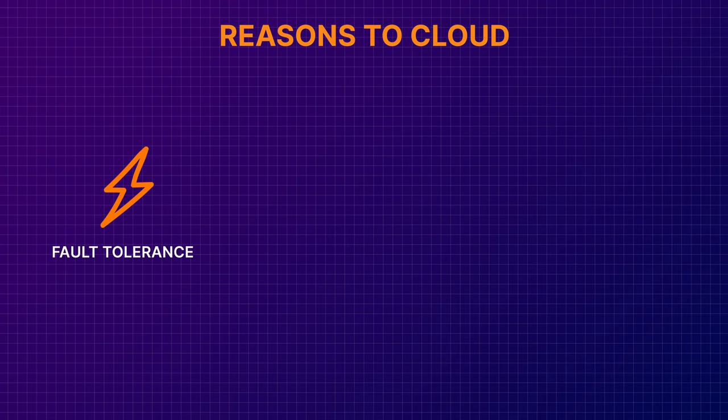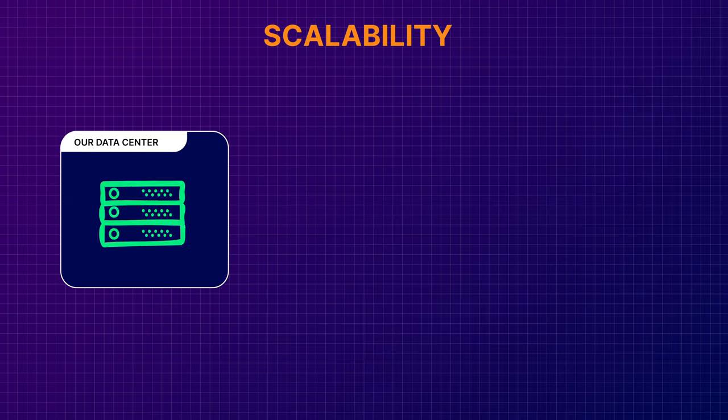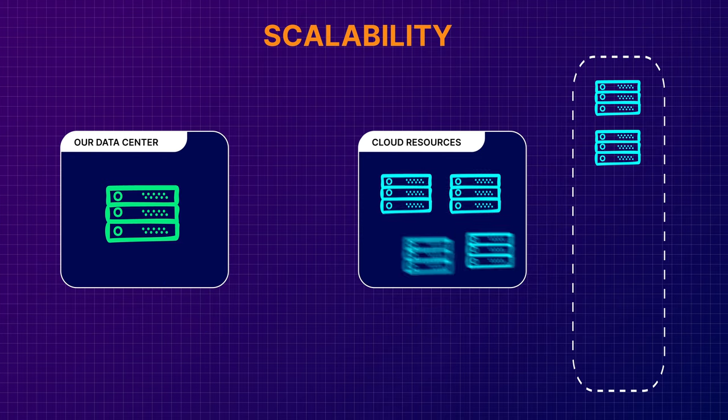Another reason companies adopt the cloud is scalability. Scale is how much or how little capacity we need to meet business needs. Obviously our goal is to have our capacity as close to our need as possible, but that's a pretty tricky thing to forecast. The pay-as-you-go model of cloud providers enables us flexibility and the ability to scale up or scale down depending on our needs.